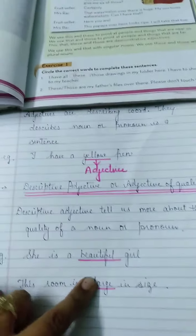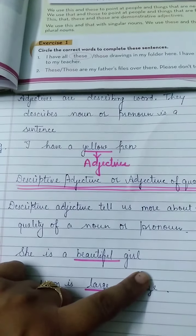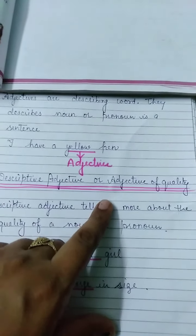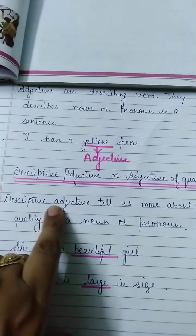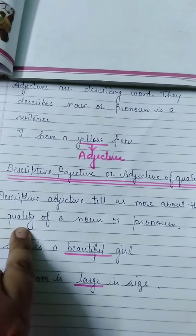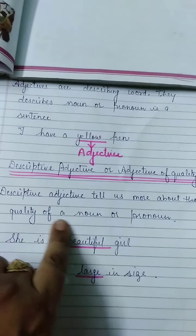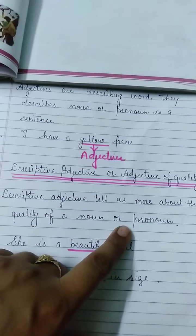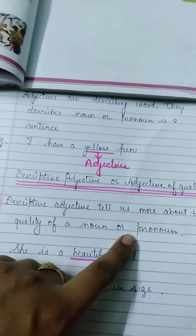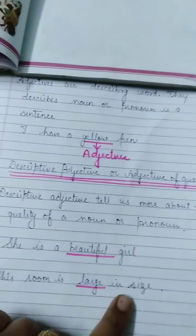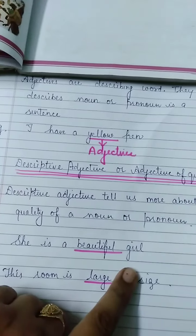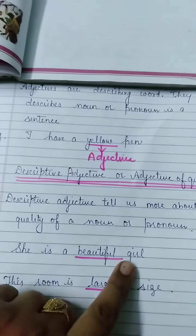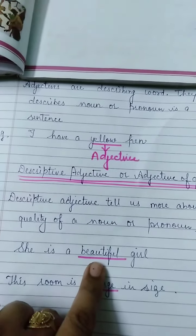Let's start the definition of descriptive adjective, or adjective of quality. Descriptive adjective tells us more about the quality of a noun and pronoun — noun aur pronoun ki more quality ke baare mein bataya jata hai. For example: 'She is a beautiful girl.' We know she is a girl, but what is the quality of girl? The girl is beautiful.